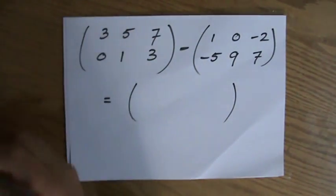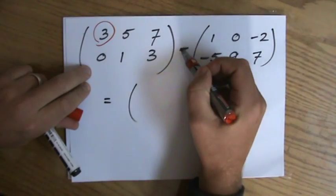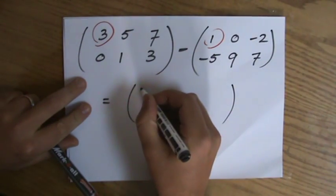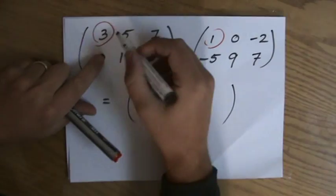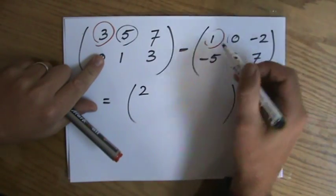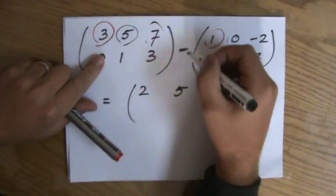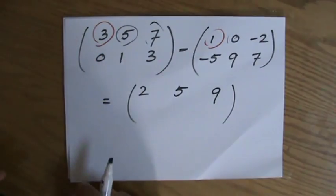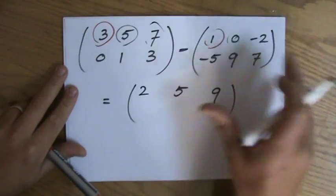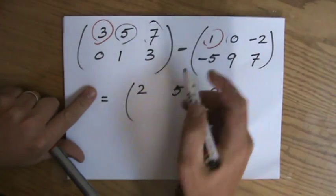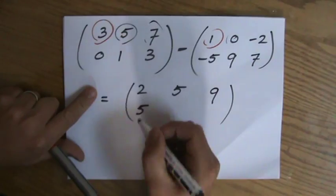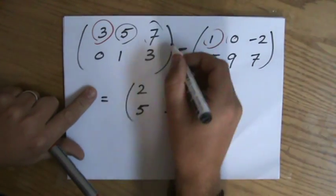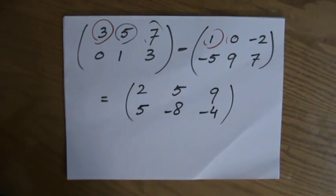So 3, and I do minus, and then the same position in the other matrix, so in that case 1, so the answer is 2. And I do 5 minus 0, so that's going to be 5, and I do 7 minus minus 2, so that's going to be 9. Careful there, subtracting the negative is actually plus. 0 minus minus 5, that is 5. 1 minus 9, it's going to be minus 8, and 3 minus 7, it's going to be minus 4.